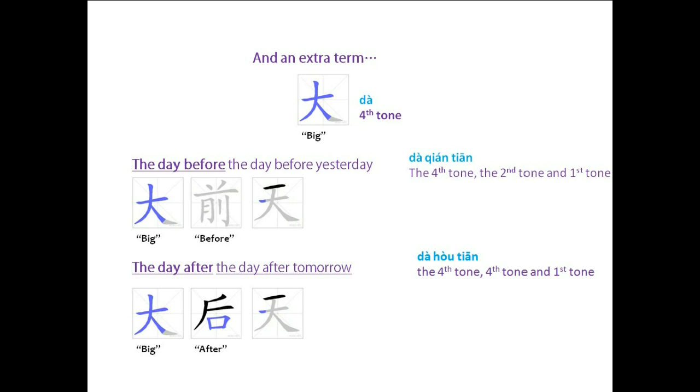The day after the day after tomorrow is 大后天 (dà hòu tiān). So if today was Monday, then 明天 (tomorrow) would be Tuesday, and 后天 would be Wednesday. And 大后天 would be Thursday.